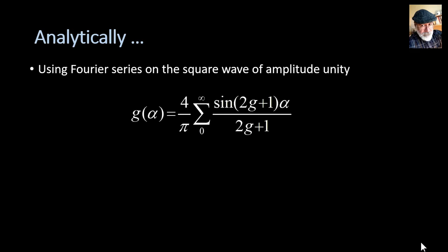Analytically, we can represent the unit square wave G of alpha like this using Fourier series decomposition. An infinite sum of sinusoids with ever smaller and smaller amplitude. Let me write explicitly the first few terms. We have the first term 4 over pi sine of alpha, then sine of 3 alpha divided by 3, sine of 5 alpha divided by 5, etc.